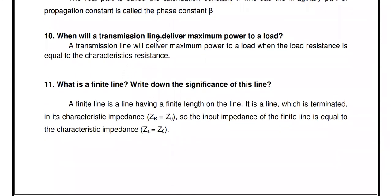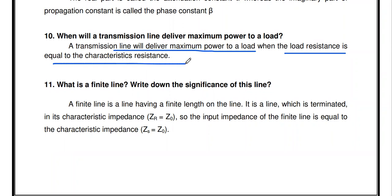When will a transmission line deliver maximum power to the load? According to the maximum power transfer theorem, a transmission line delivers maximum power to the load when the load resistance equals the characteristics impedance. Only when the load impedance equals the characteristics impedance will maximum power be delivered to the load.